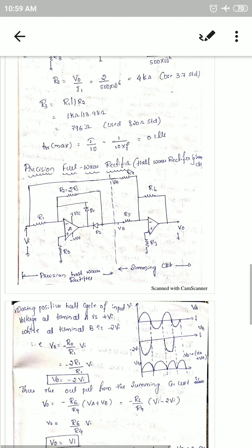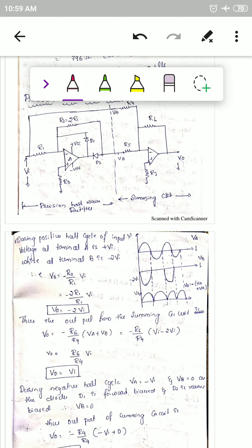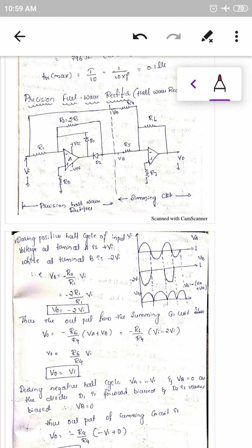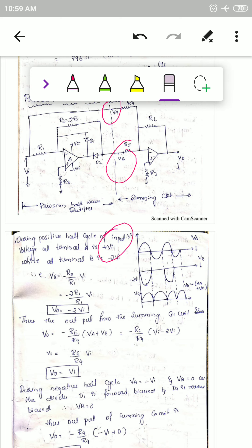During the positive half cycle of the input voltage, terminal A is at positive potential. So VA equals positive vi. During the positive half cycle, at terminal B, VB will be negative vi minus 2 times vi.